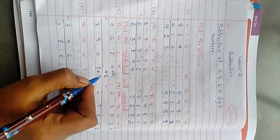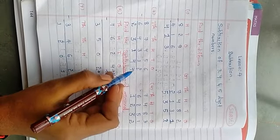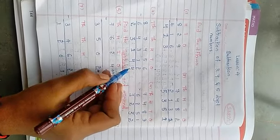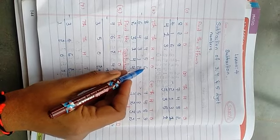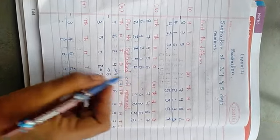So what you have to do? Just see, I told here, if you want to cross check, you have to add these two to get 6. 4 plus 2 is 6.